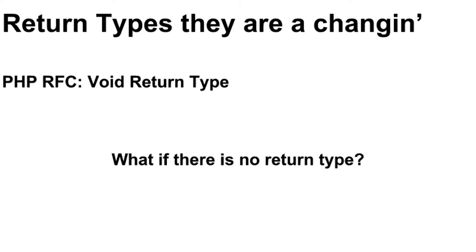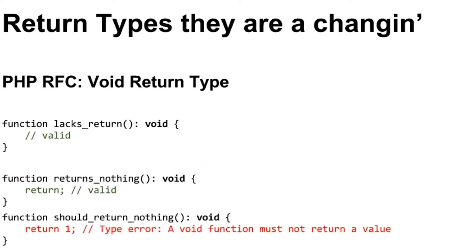So that is the first one — nullable return types. The other one they're trying to solve is the void return type. What if there is no return type? There are a lot of valid instances where you've got a method that does something that doesn't return anything. One of the great things about return types is it helps so much with documentation, not only generating PHP docs but just reading the source code — it makes it immediately obvious what a function is supposed to return. Now PHP comes in line with a lot of other languages by doing the void return type, which means this method returns nothing.